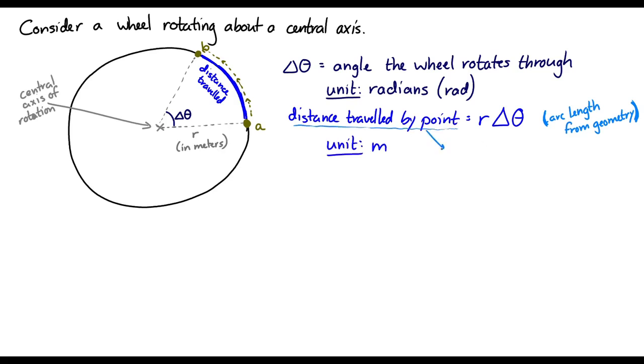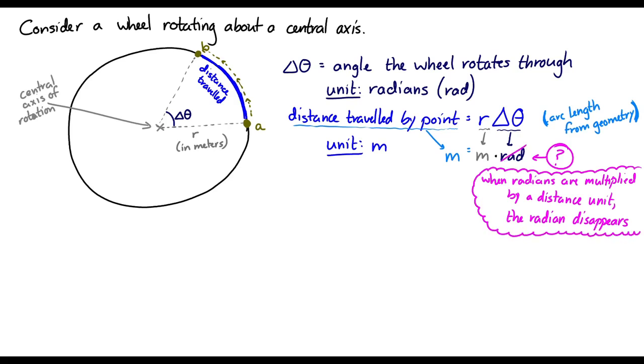So if we think about the units, we end up with the idea that a meter is equal to a meter times a radian. It turns out that when radians are multiplied by a distance unit, the radian disappears. The radian is a different kind of unit, and we're not going to delve too deeply into that. But just be aware of it.